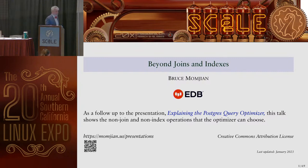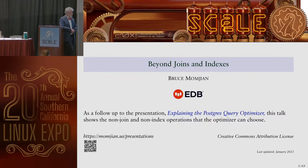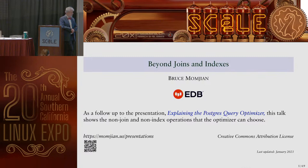I'm excited to be giving this talk. About eight, nine, ten years ago, I wrote a talk called 'Explain the Postgres Query Optimizer,' and many of you may have seen that. I've delivered it about 20 times at different conferences. It basically unlocks the basics of the optimizer — the idea of when to use indexes, what type of joins to use, and how the limit clause impacts queries.